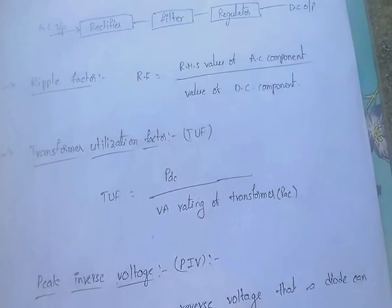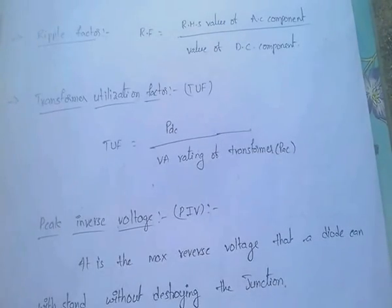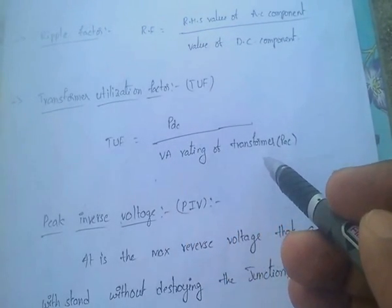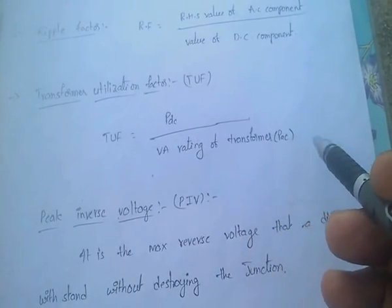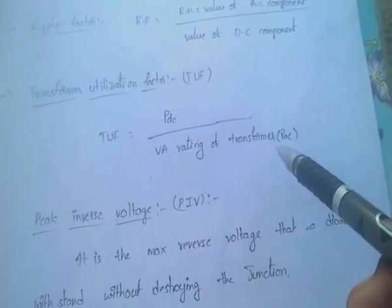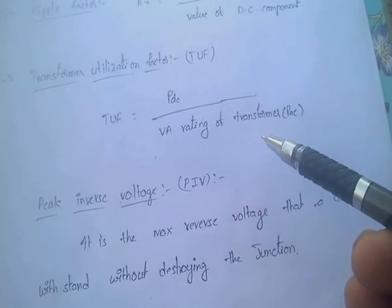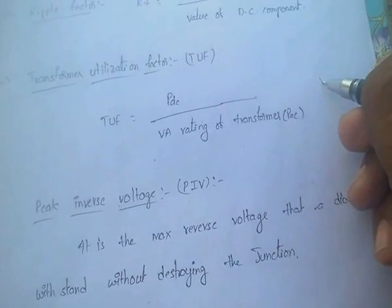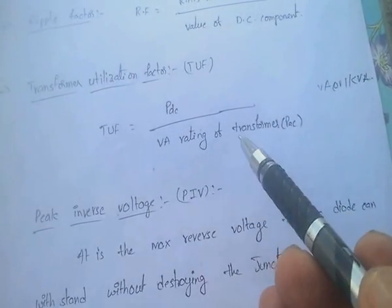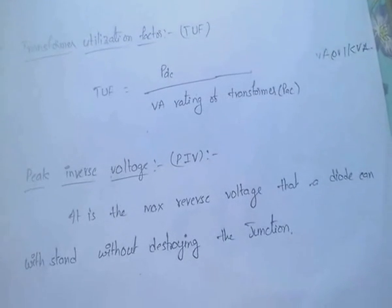Another important term is transformer utilization factor (TUF). TUF equals power in DC divided by the VA rating of the transformer, which is the power in AC. Transformers are measured in VA or volt-ampere, or KVA (kilo volt-ampere). So TUF equals P_DC divided by the VA rating of the transformer.